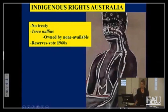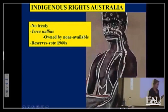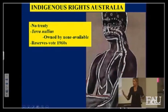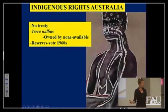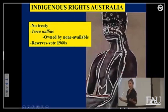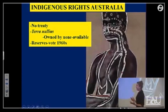Aborigines had no treaty, no nothing. They had something called terra nullius. This means that when Europeans got to Australia and saw the Aboriginal people, they said, 'This is owned by no one.' The Aborigines aren't really people, so it's terra nullius — not owned by anyone. We take it. Terra nullius: owned by none.